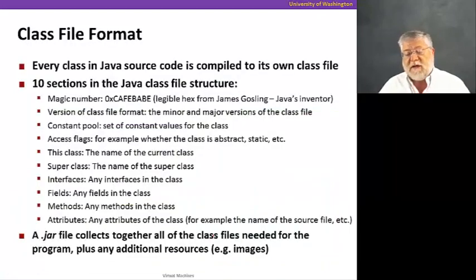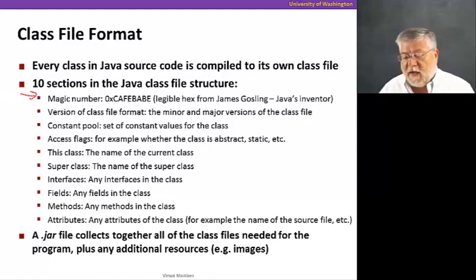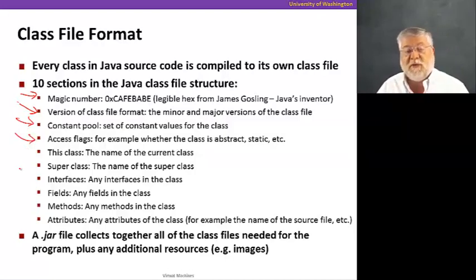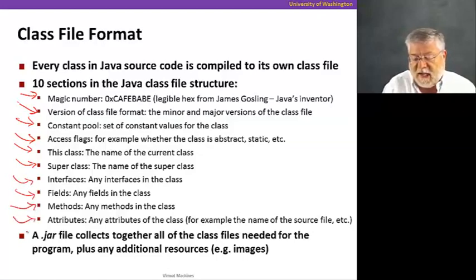The Java class file has everything that's associated with a class in Java. There are ten sections actually to a class file. There's a magic number that starts things off at the beginning. A version of the format that's being used just to keep things straight as Java is updated. A set of constant values that are going to be used in this class. Some special flags to differentiate whether this class is abstract or static. The name of the class. Its super class that it inherits things from.